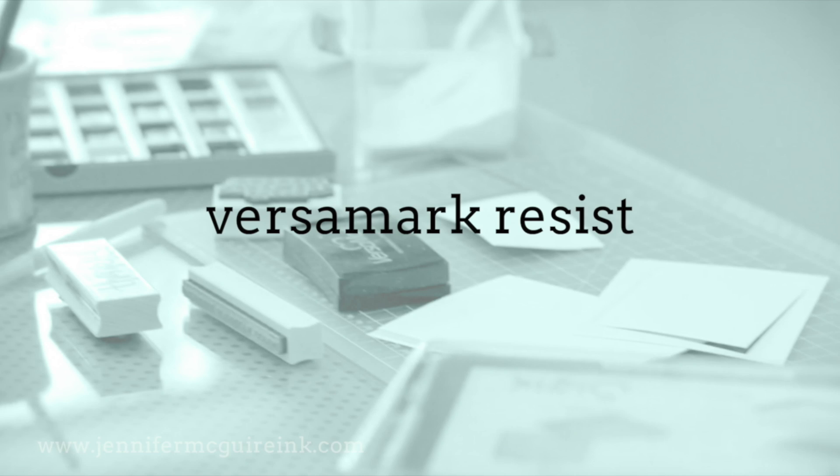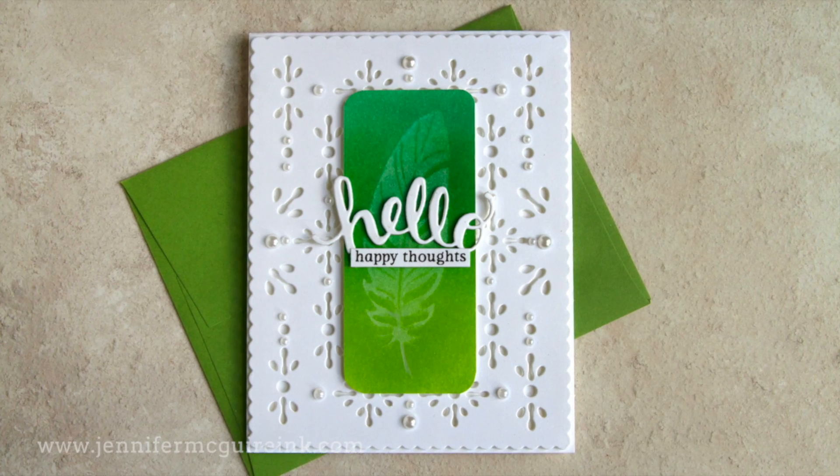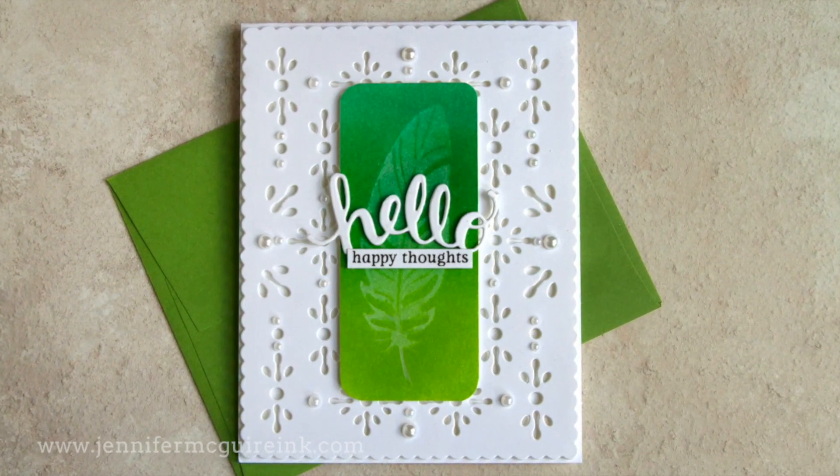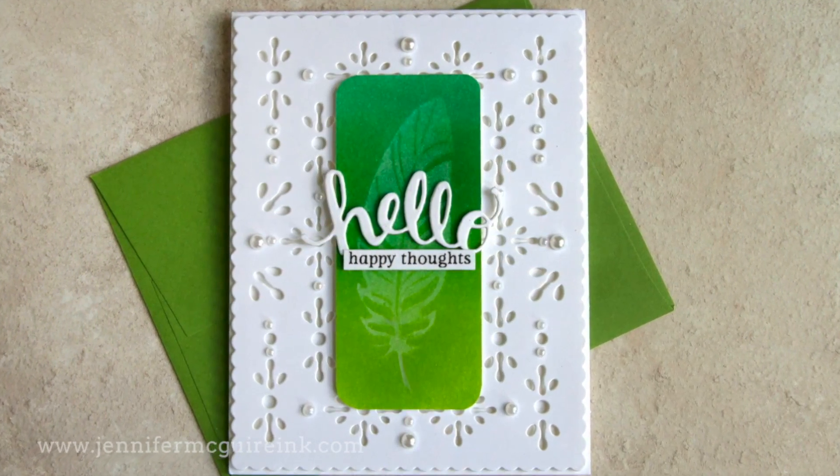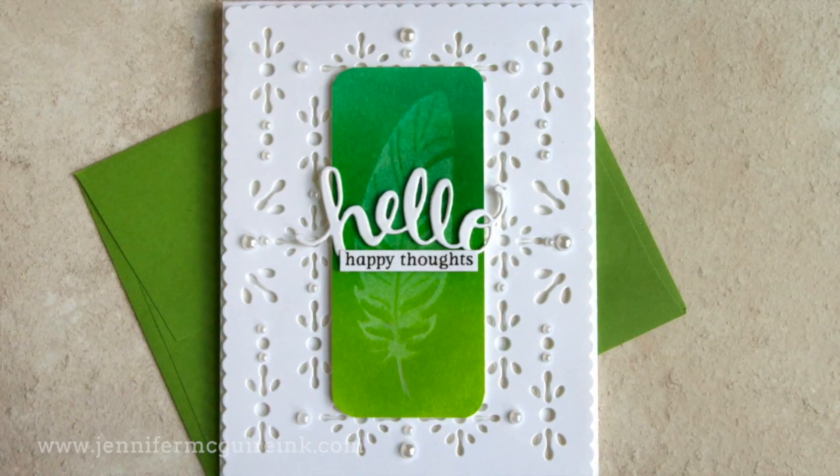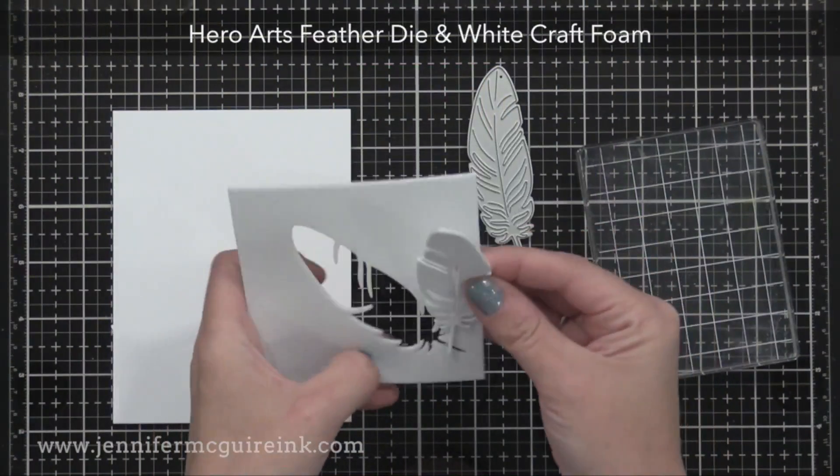If you want softer results, you can use Versamark resist without heat embossing. This kind of looks like the white pigment ink one from before, but instead I use Versamark ink. This time I thought I'd create my own stamp from a die.